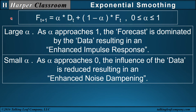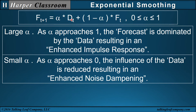Now let's look at the characteristics of exponential smoothing contained in the parameter alpha. For large alpha, as alpha approaches one, the forecast is dominated by the data, resulting in an enhanced impulse response. An impulse is something in the demand data that's important, like a signal or a trend. If we want to respond to that impulse, we want our forecast to be dominated by our data, so to enhance impulse response, we increase alpha. For small alpha, as alpha approaches zero, the influence of the data is reduced, resulting in enhanced noise dampening. If the variability in our demand data is noise — a random component — we want to dampen it, so to enhance noise dampening, we decrease alpha, reducing the influence of demand variability in the forecast.